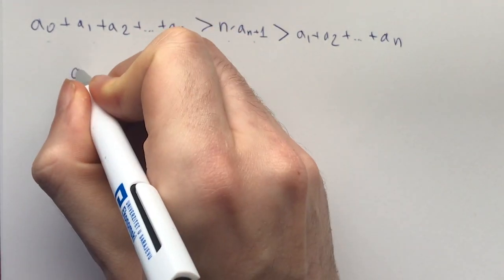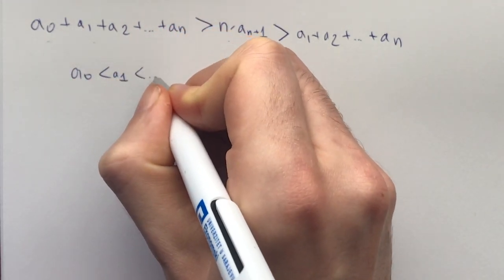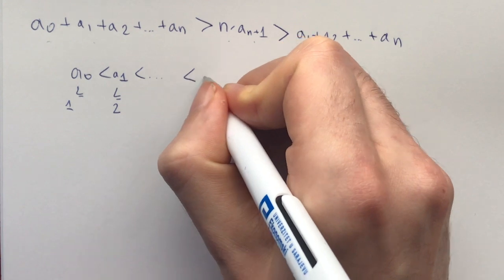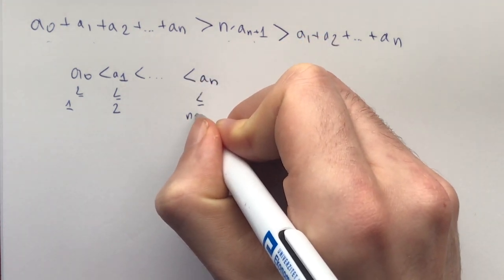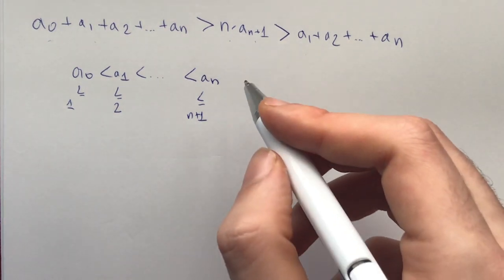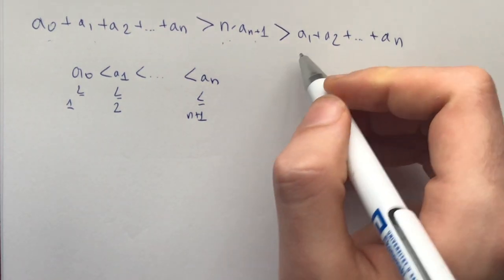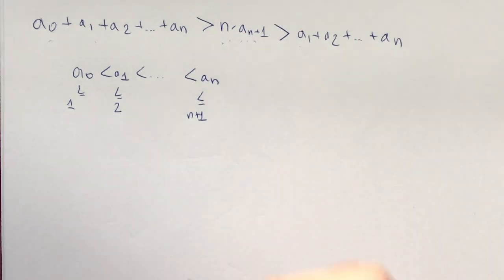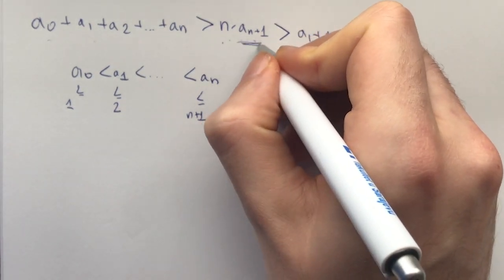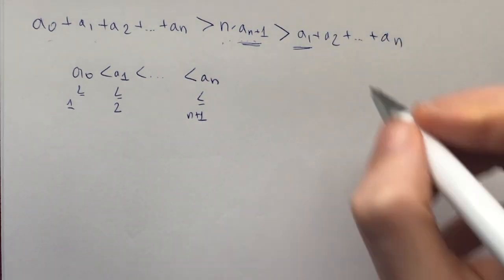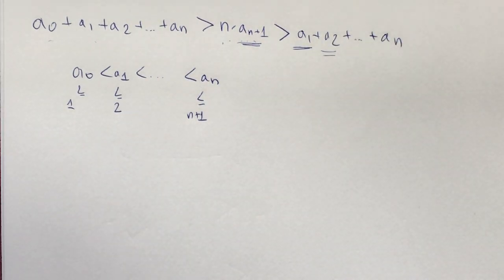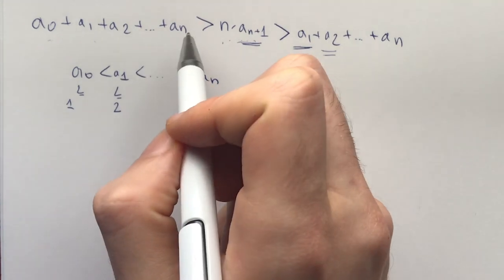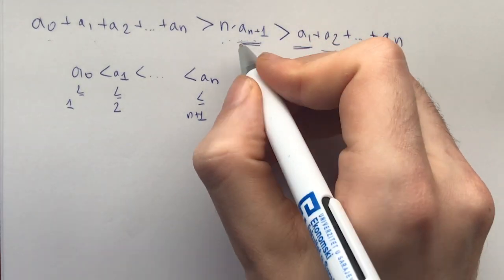Also recall that because a_0, a_1 are all positive integers, a_0 is greater than or equal to 1, which means a_1 is greater than or equal to 2, and in general a_n is greater than or equal to n plus 1. Now, if you think about our estimate, n times a_{n+1} gets weaker as n grows, because a_{n+1} gets much, much bigger than a_1 and a_2 as n grows. This gives the intuition that our assumption can't always be true — it's just a matter of finding a better estimate.